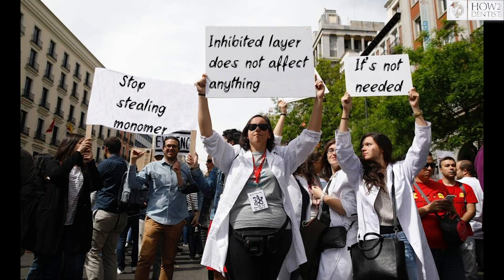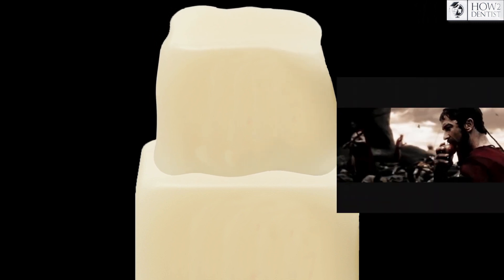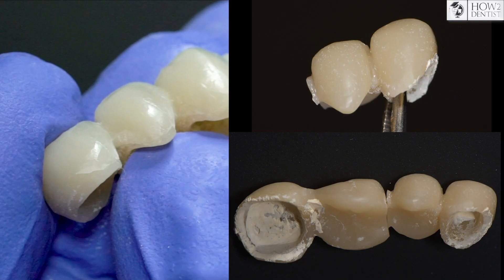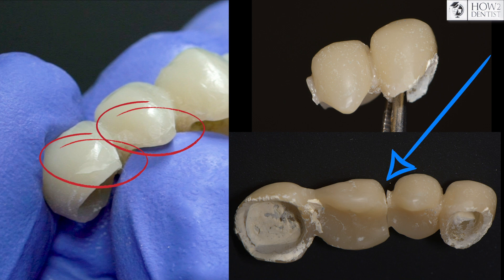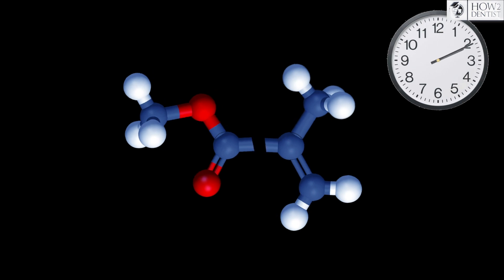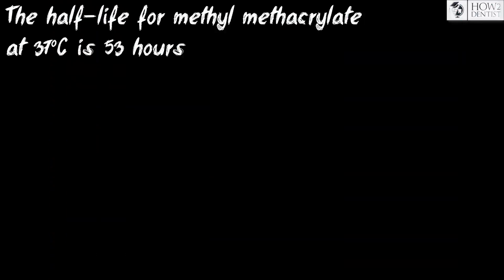Other authors claim that the presence of the inhibited layer does not affect adhesion and in some cases even worsens it, explaining this by the unevenness of the layer, as well as the destruction of bonds due to shrinkage, which impairs the strength of the restoration. Poor adhesion of a new portion of material when relining and repairing temporary composite crowns after prolonged wear is due to the lack of free monomer bonds in the old layer, which degrade over time and wash out due to the aggressive environment of the oral cavity.